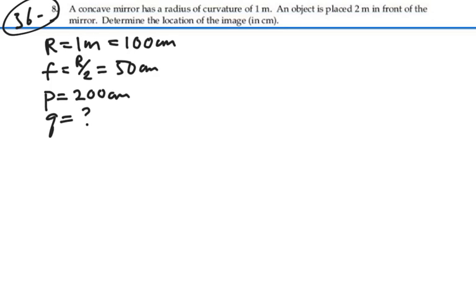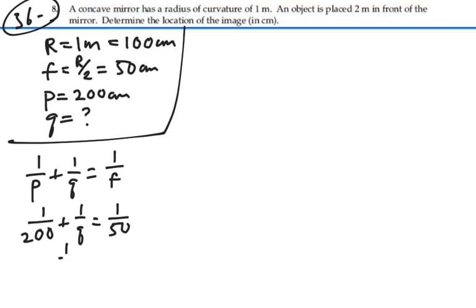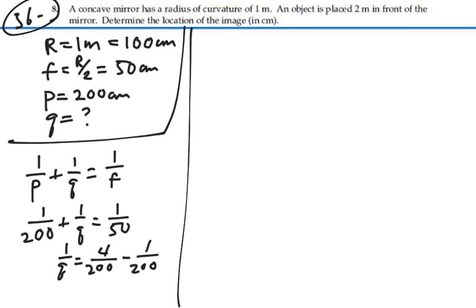And we want to find q. Looking at the mirror equation: 1 over p plus 1 over q equals 1 over f. So we have that 1 over 200 plus 1 over q is equal to 1 over 50. Or 1 over q is equal to 4 two-hundredths, which is 1 over 50, minus 1 two-hundredth.